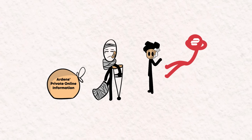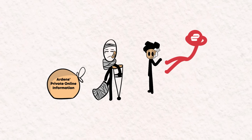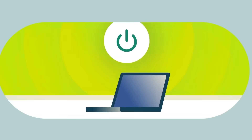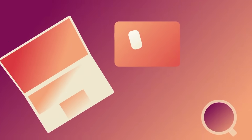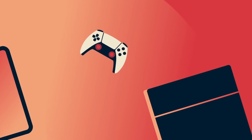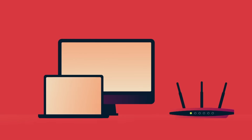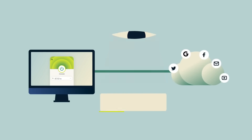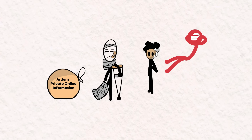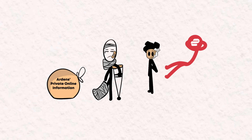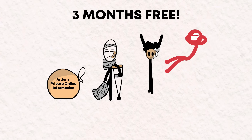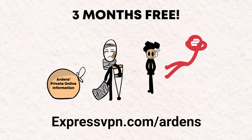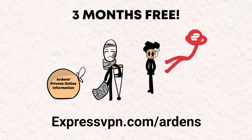I want to give a huge thank you and shoutout to ExpressVPN. ExpressVPN is an app that reroutes your internet connection through their secure servers so your ISP can't see the sites you visit. I use it on all of my devices — it works on everything: computers, phones, tablets, and more. ExpressVPN keeps all of your information secure by encrypting 100% of your data with the most powerful encryption available. They're giving away 3 months free on a 1-year package to all Ardence viewers. Secure yourself by visiting ExpressVPN.com/Ardence today — link in the description.